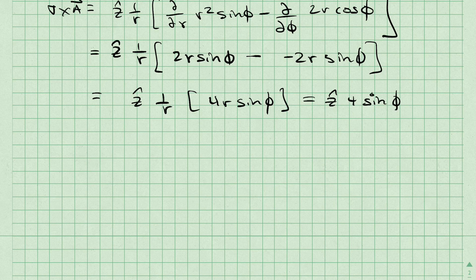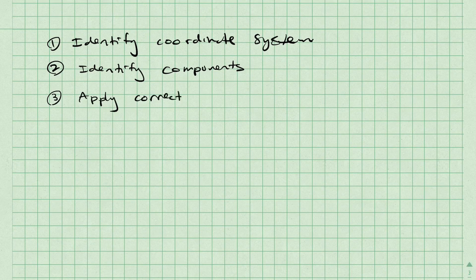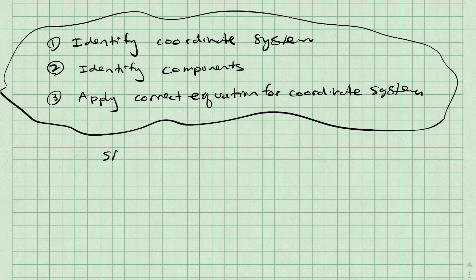To summarize, here are the steps to compute curl: 1, identify the coordinate system; 2, identify the components; and 3, apply the correct equation. These are just the same steps for calculating divergence, but for different equations. Thanks for watching, see you soon!